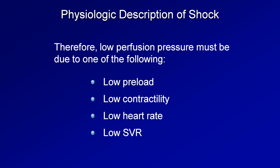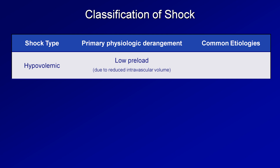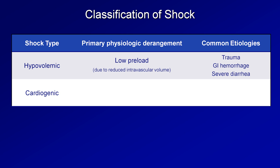From these parameters we get our shock subtypes. First is hypovolemic shock. The primary physiologic derangement here is low preload, specifically due to reduced intravascular volume. Common etiologies include hemorrhage from traumatic injury, GI hemorrhage, and severe diarrhea. Next is cardiogenic shock — shock secondary to low contractility. Common etiologies include an acute myocardial infarction or heart attack, a severe exacerbation of chronic CHF from any cause, and viral myocarditis.